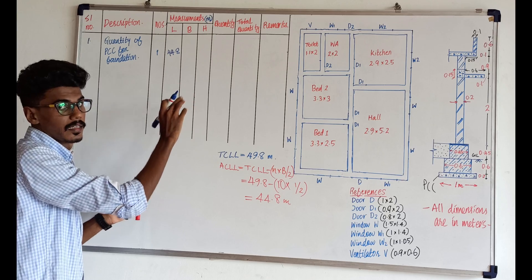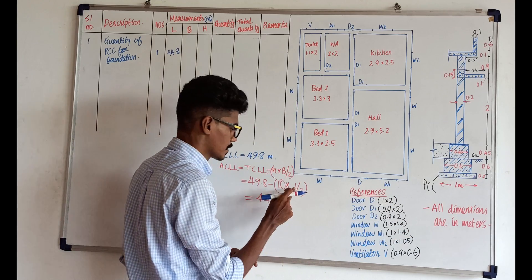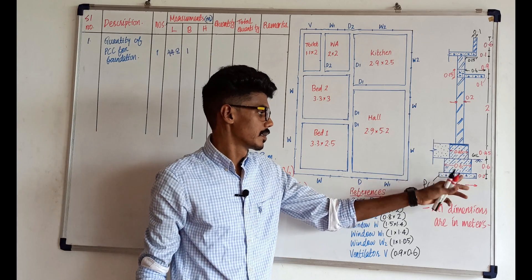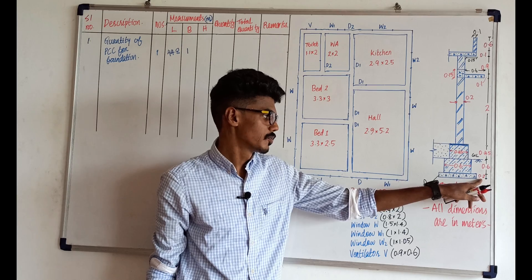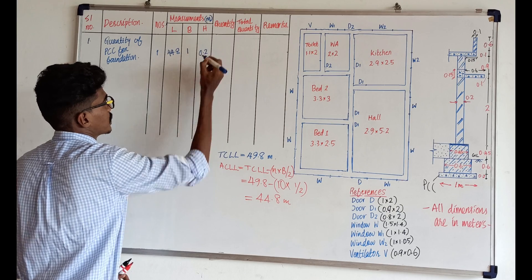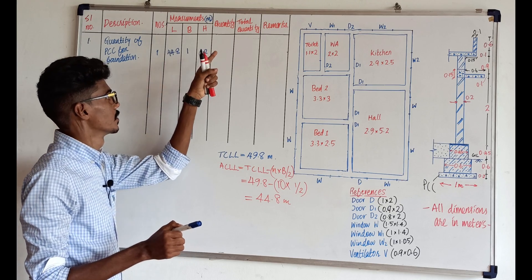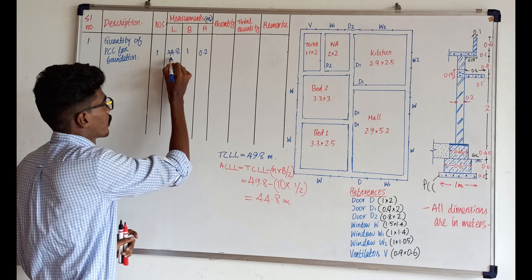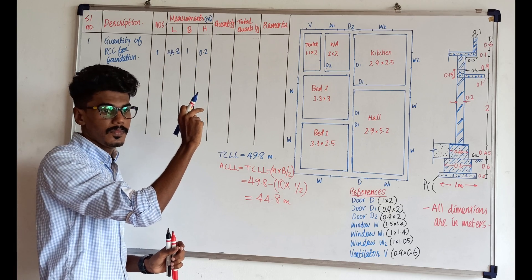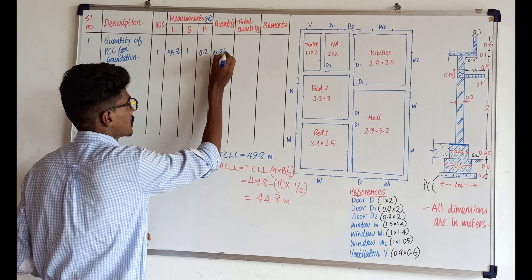This is 4m. We assume the full length layer — I assume this is b, the value of Eb. 1 meter is the height — we call it PCC. We call it 0.2 meters. The quantity is just length into breadth into height: 44.8 into 1 into 0.2.